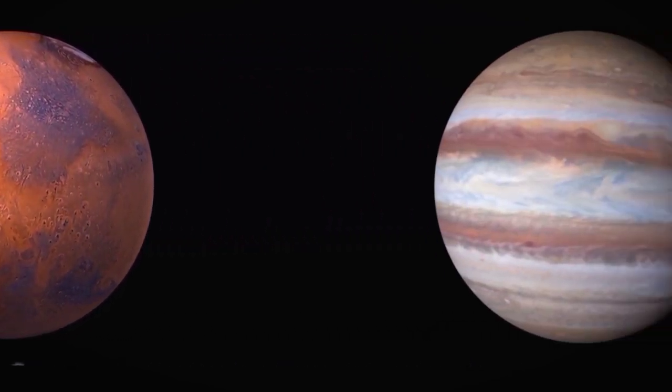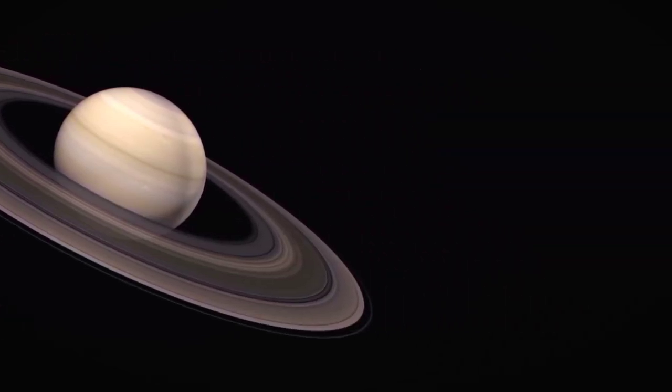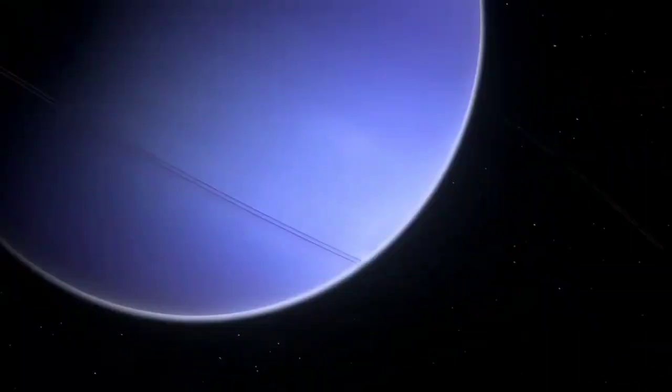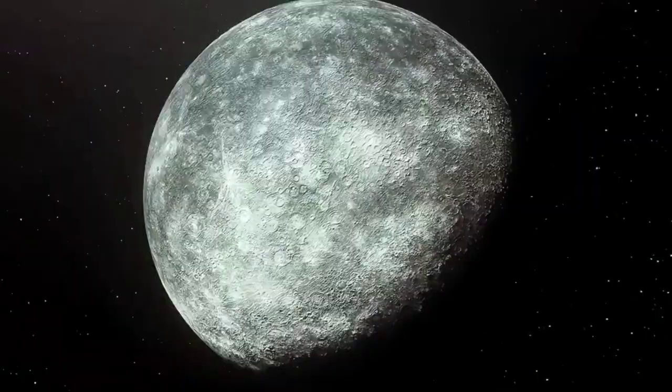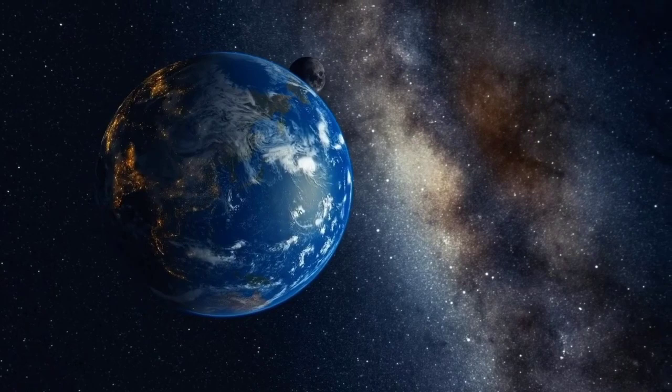Pluto's orbit around the Sun is unique, setting it apart within our solar system. Its orbit is notably elongated, crossing great distances as it travels. Since its discovery in 1930, Pluto has yet to complete a full revolution around the Sun, which adds to its mystique.